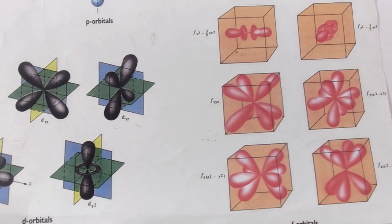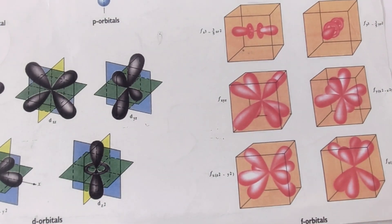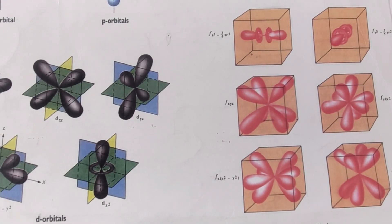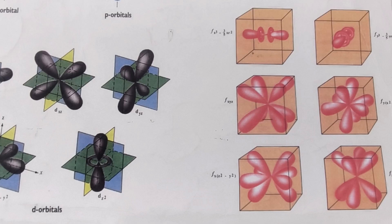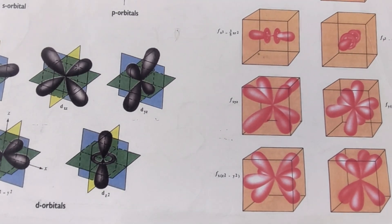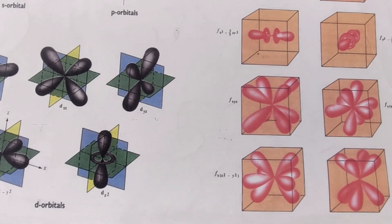Hello students, once again welcome you all to my YouTube channel Pacific Chemistry Classes. As we studied the shapes of the orbital, we know which quantum number tells us about the shapes of the orbital. It's our magnetic quantum number. It tells us about the shapes of the orbital.